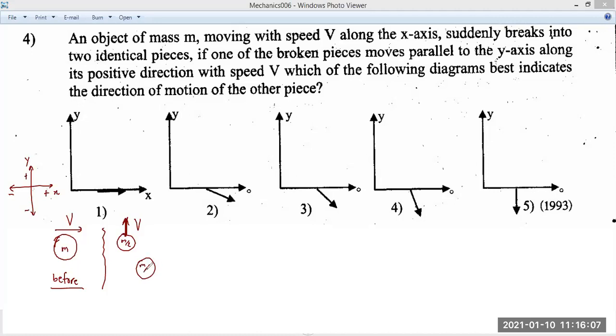Now, talking about the other mass, you have to understand one thing. Initially, the object has momentum towards the right. So, finally also, there should be a momentum in the right direction.